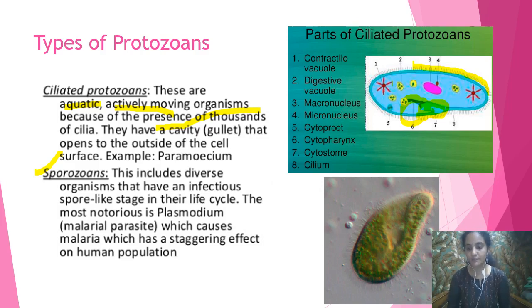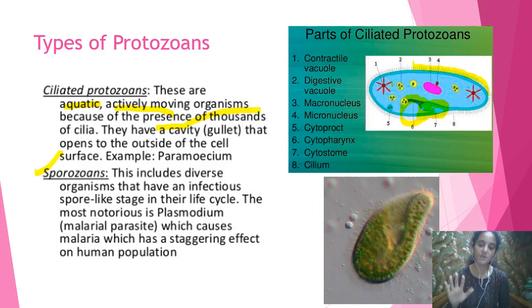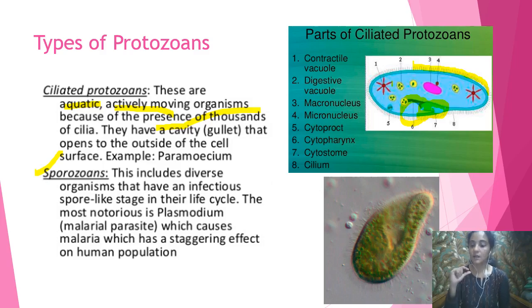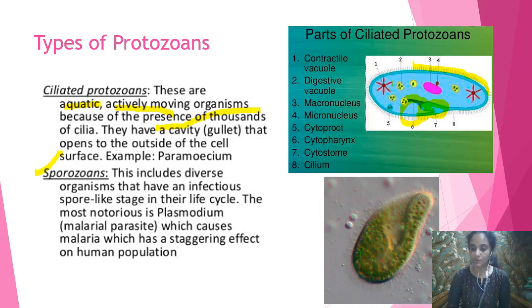Next class we will deal with the next kingdom — Kingdom Fungi. So far, we have discussed Whittaker's classification covering Kingdom Monera and Kingdom Protista. Three kingdoms remain: Fungi, Plantae, and Animalia. Please revise these terms — dinoflagellates, euglenoids, chrysophytes, slime molds, protozoans. Use your NCRT book alongside this video. Thank you students, have a nice day.